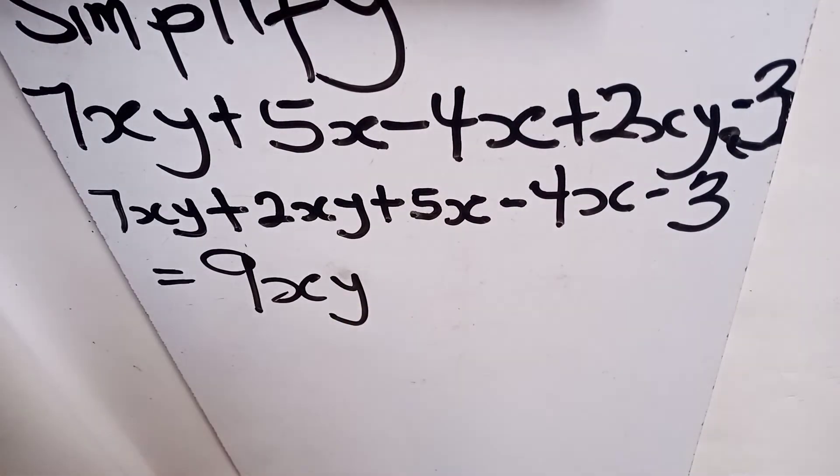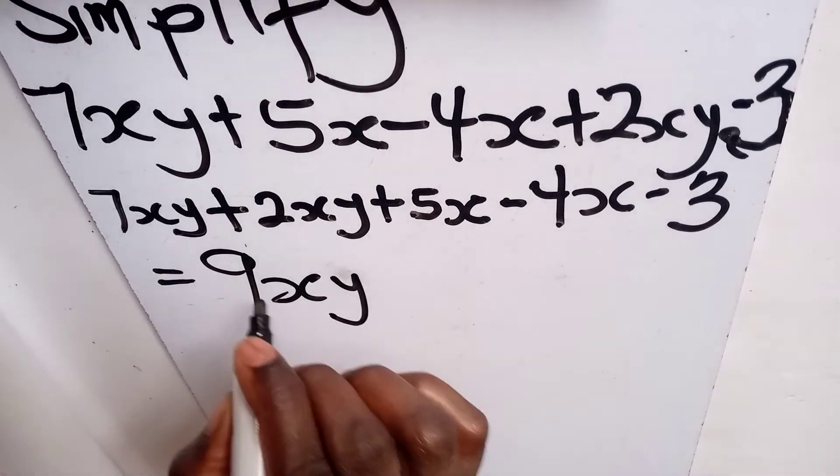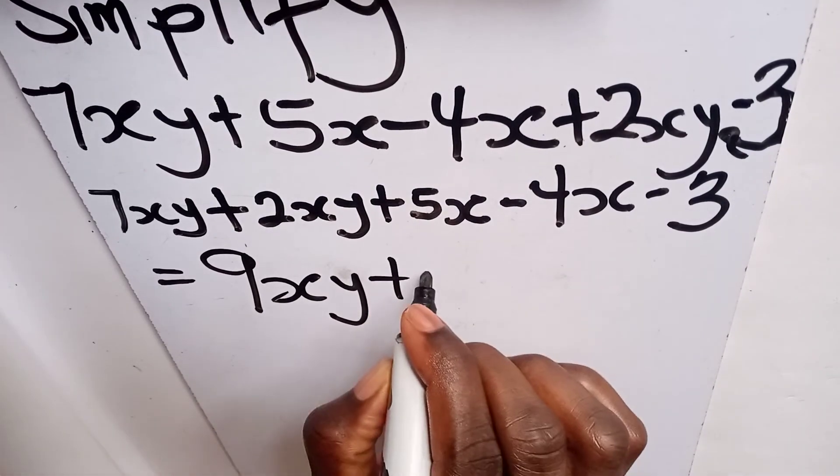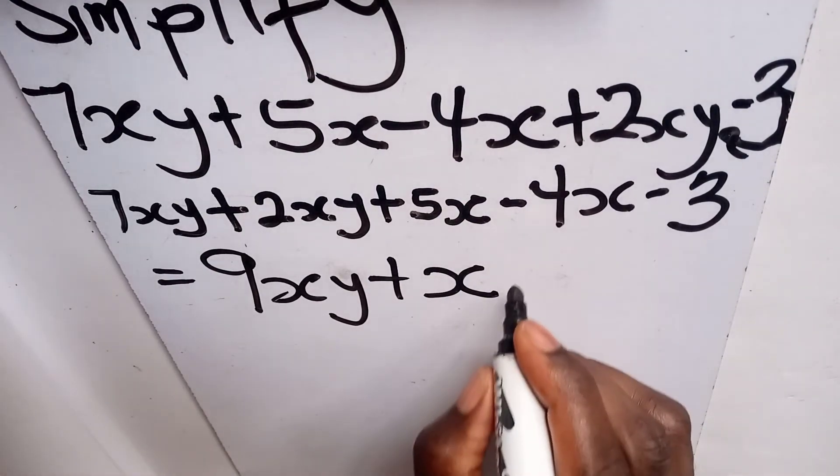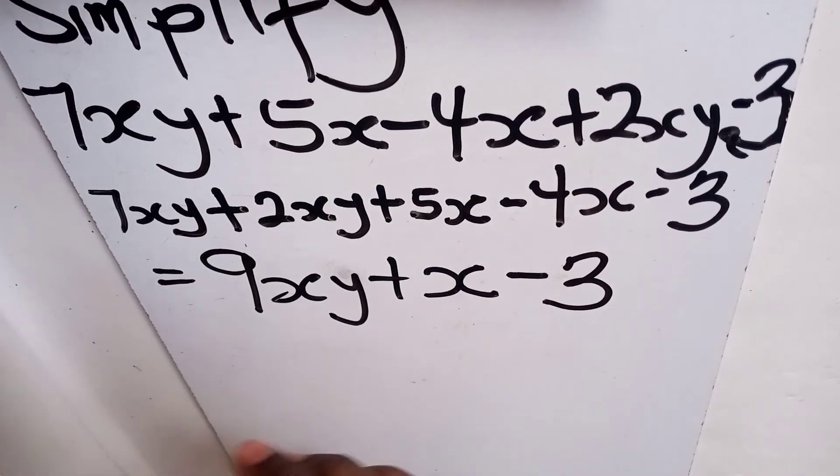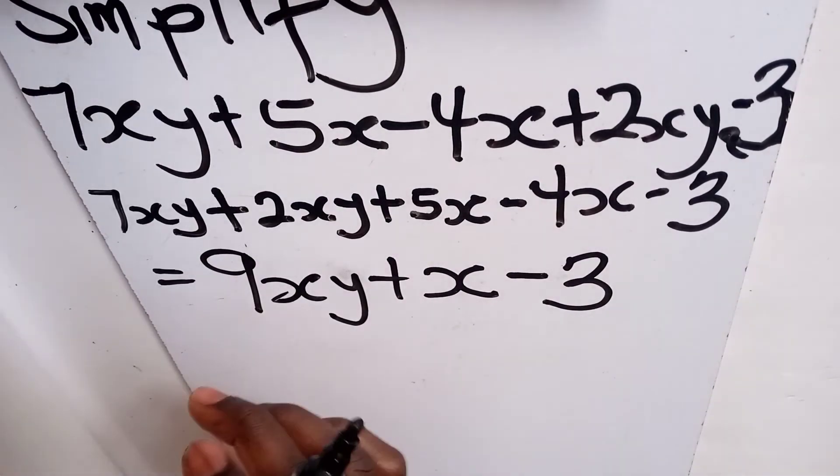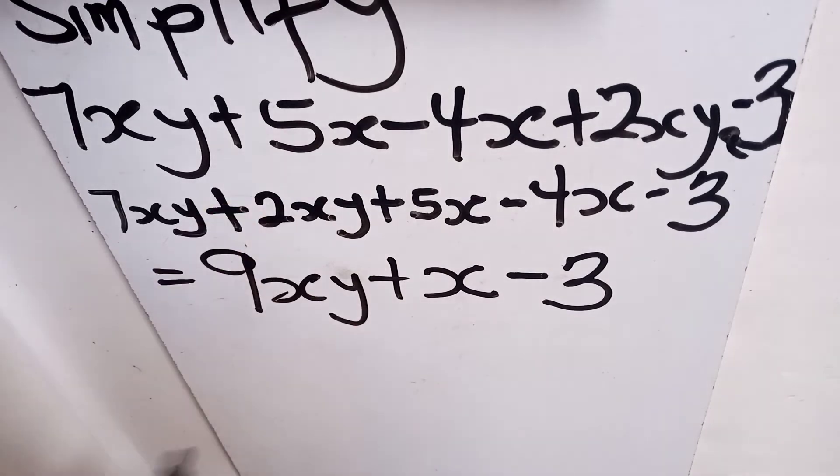So that one, you can write it as 1x or you can write it as x. So 9xy, then plus x. Then, we have only one constant number, which is negative 3. So these are separate terms, and that is the simplest form of the expression.